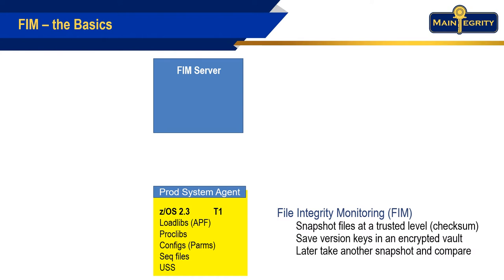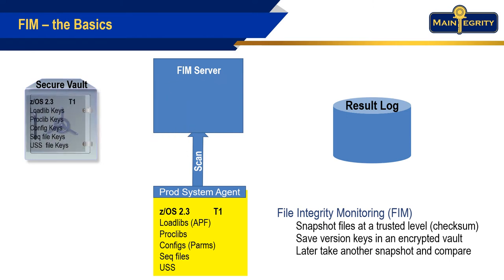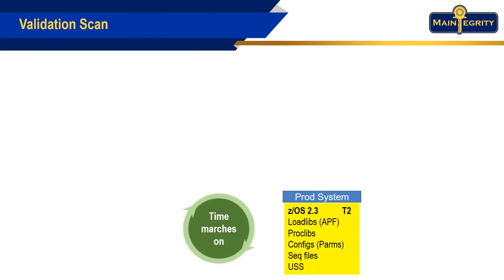The keys are created by the agent and sent to the server. The keys are two-part and contain a hash from the contents of the file and a hash code from the metadata of the file. The keys from the initial scan are stored in the vault by the server and a log record is created. When these initial keys are stored, you're starting to create a whitelist of the programs you're going to allow to run on your LPAR.